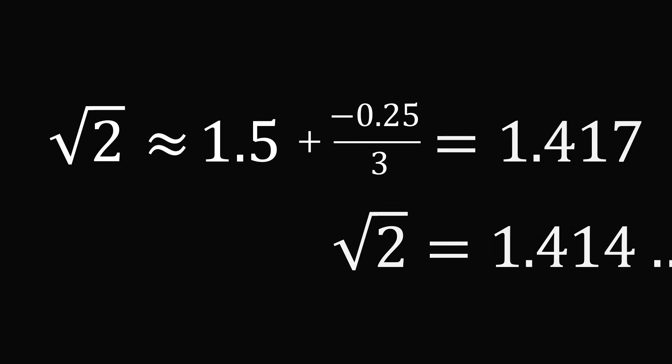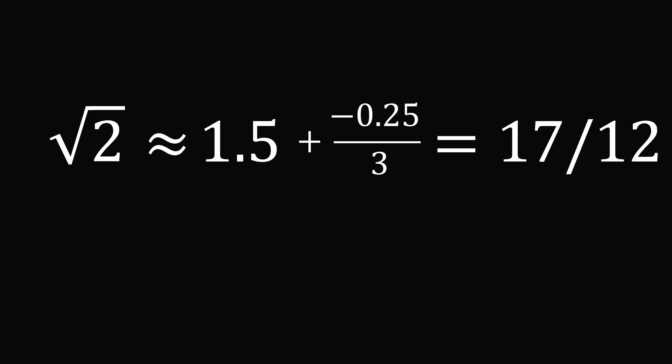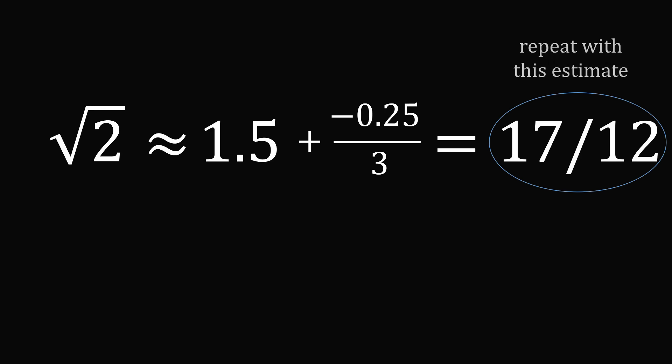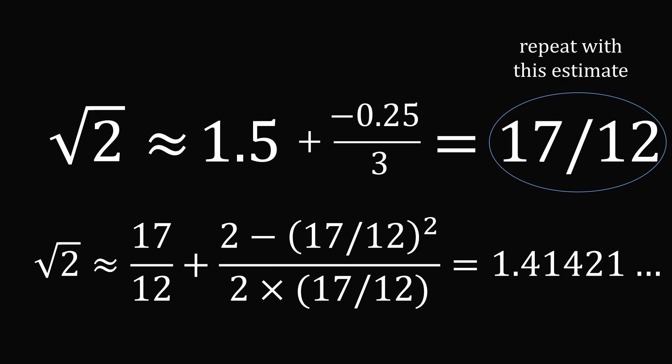There's no need to stop here. You can take this value as the new guess and repeat the whole process. After a third iteration, you end up with a value of the square root of 2 that is accurate to five decimal places — just like the Babylonians inscribed on the clay tablet. So it is truly a remarkable method.